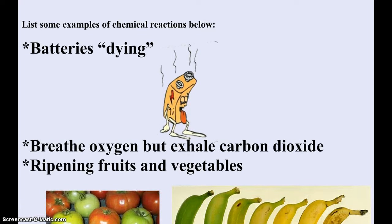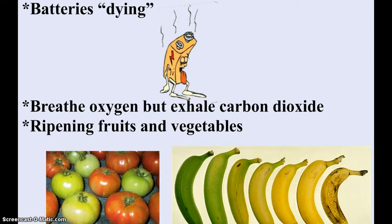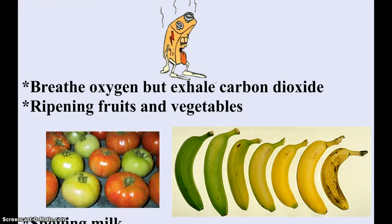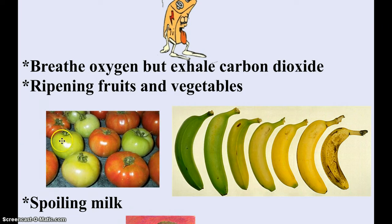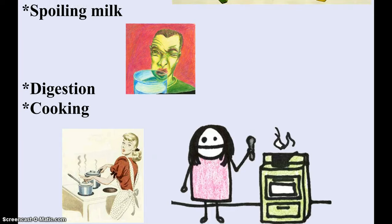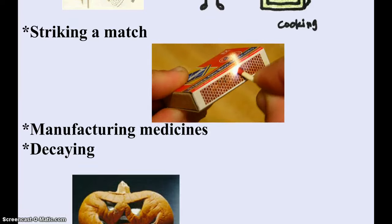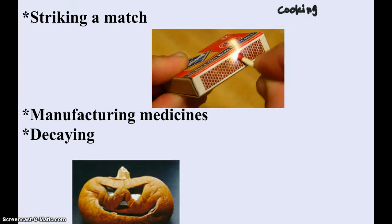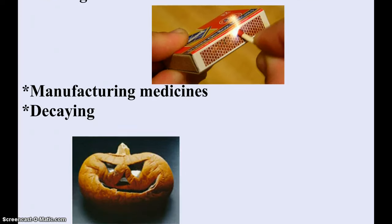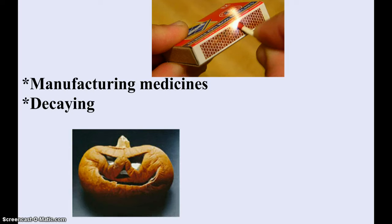Examples of chemical reactions include: a battery, which is a little chemical factory — once the reaction is done, the battery dies. Breathing in oxygen and exhaling carbon dioxide. Fruit and vegetables ripening — going from unripe to ripe to spoiled. Spoiling milk — spoiled milk is a very different substance than fresh milk. Digestion. Cooking — using heat to change the structures of ingredients to make them more palatable. Striking a match. Making medicines. And the decaying process, when ripening goes way too far.